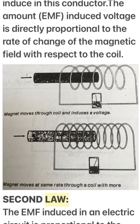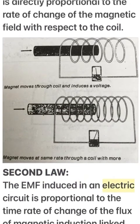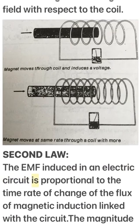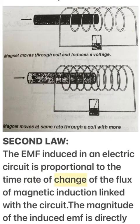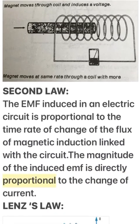Faraday's Law — Second Law: The EMF induced in an electric circuit is proportional to the time rate of change of the flux of magnetic induction linked with the circuit. The magnitude of the induced EMF is directly proportional to the change of current.